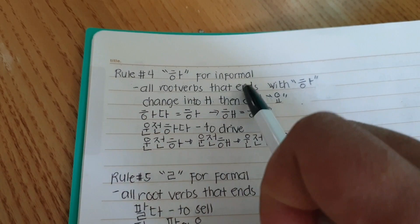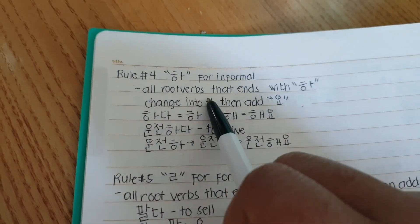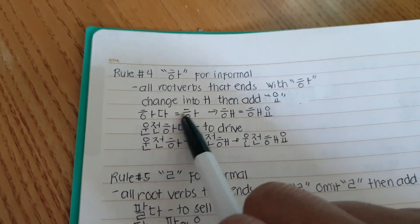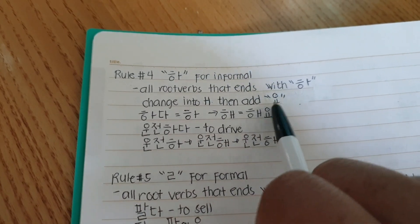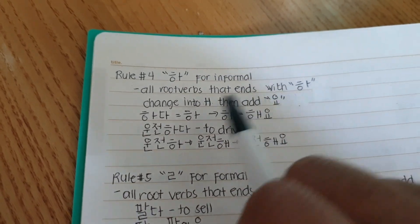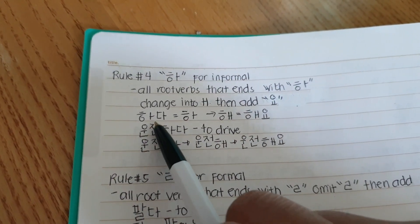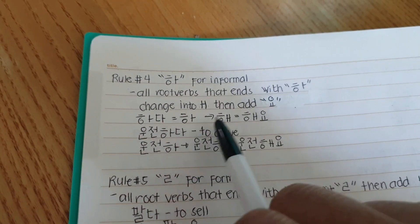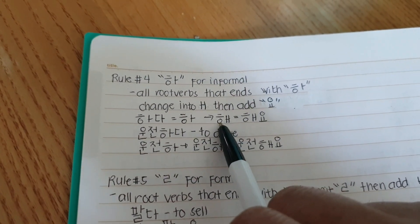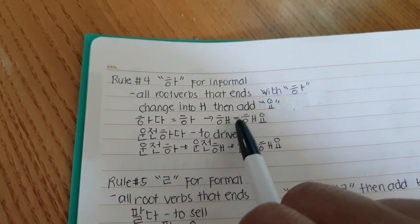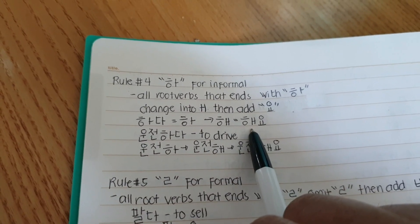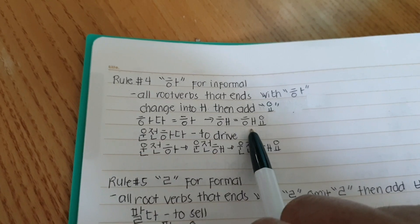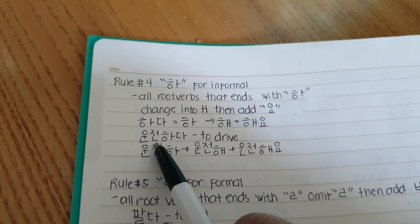Rule number four: 'ha' for informal. All root verbs that end with 'ha' change into 'he', then add 'yo'. For example, 'hada' — the root verb would be 'ha', then it will become 'he', and the present informal would be 'heyo'.